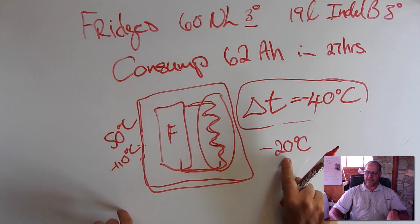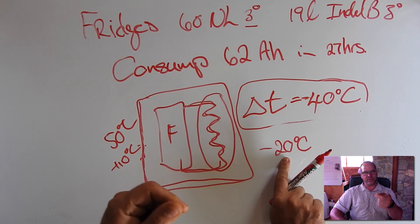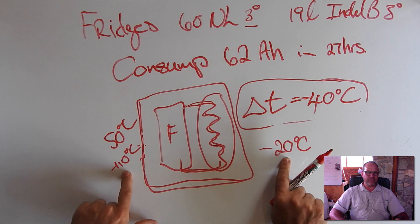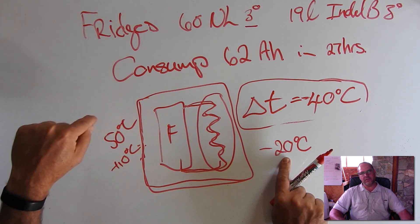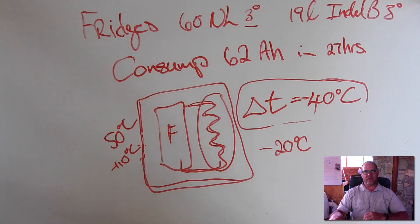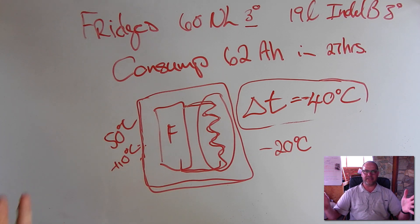What this means is, the fridge is striving for minus 20 because I set it to go to minus 20, but I can only go down to plus 10. I cannot go any further because the environment is way too hot. That means the fridge is going to run all day long. So if you are standing and not charging the batteries, this fridge is just going to drain your batteries.